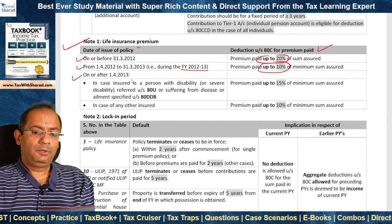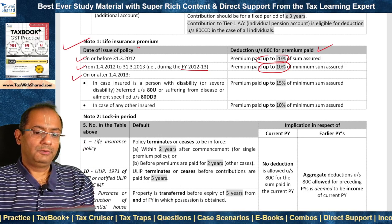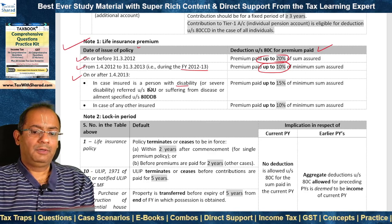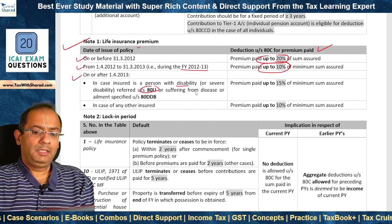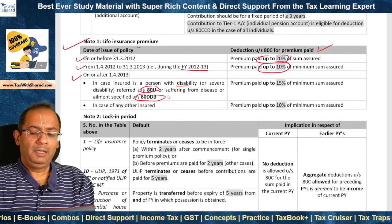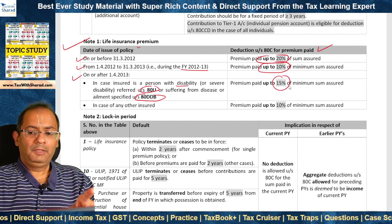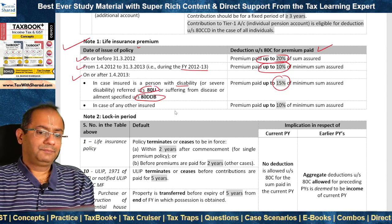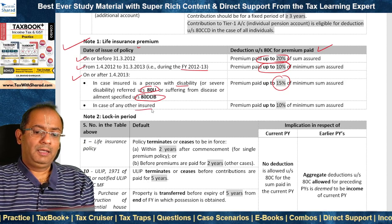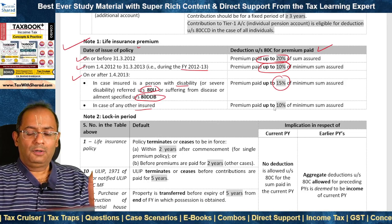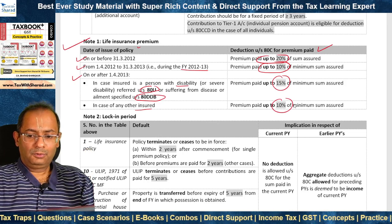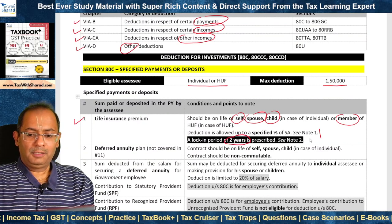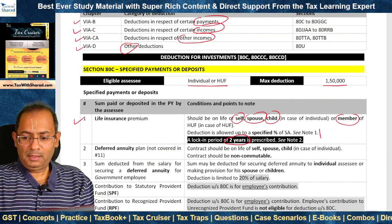For policies issued on or after 1st April 2013, there are two situations. Where the insured is a person with disability or severe disability referred under Section 80U, or suffers from a disease or ailment specified under Section 80DDB, the percentage is 15%. In the case of any other insured, the deduction is for premium paid up to 10%. A lock-in period of 2 years is prescribed.